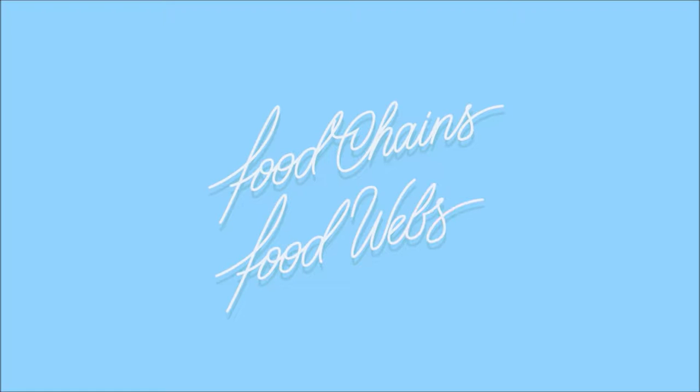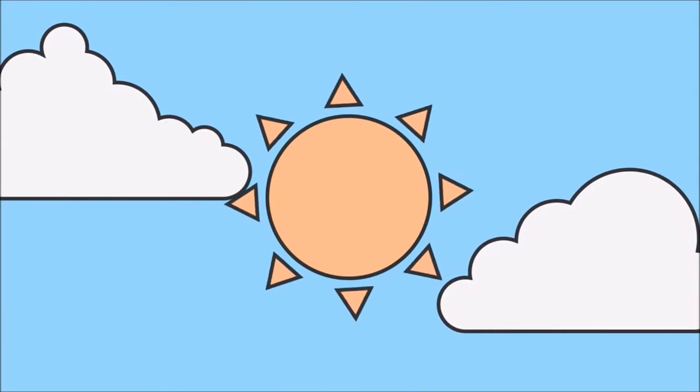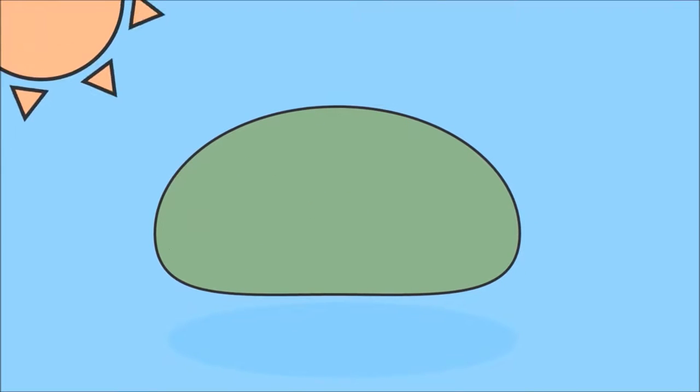A food chain is a single path which helps us work out who eats whom in a habitat in order to get the energy and materials required for nutrition. Ultimately, the sun is the initial source of energy for nearly all living things. A food chain begins with an organism that can utilize this energy directly to make its own food.